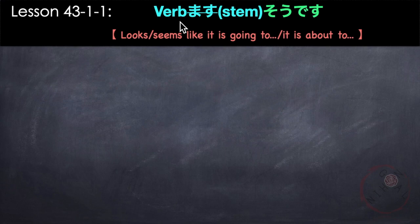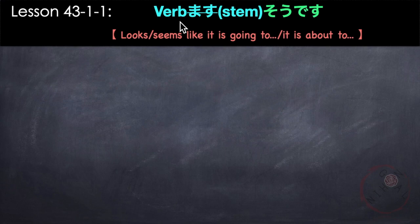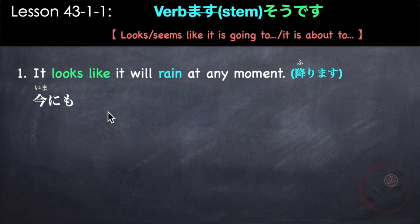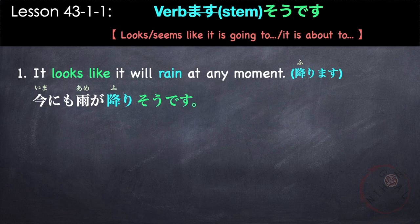For the first pattern, we have the verb, remove the mas to get the stem, followed by so desu — meaning something looks or seems like it is going to verb, or is about to verb. For example, 'It looks like it will rain at any moment.' The verb is furimas. So: imanimo amega furi — remove mas, we get the stem furi — followed by so desu. Imanimo amega furi so desu.